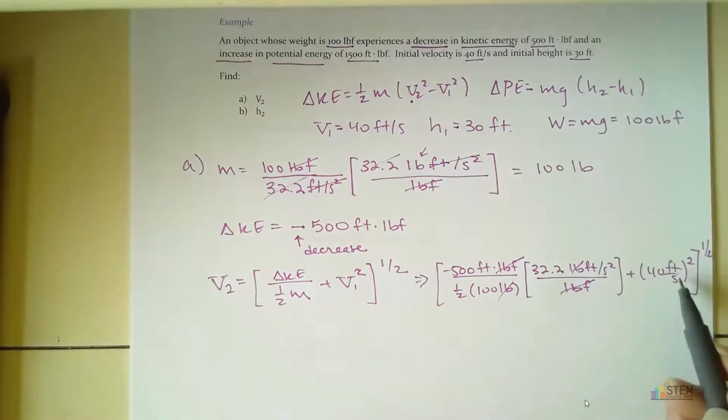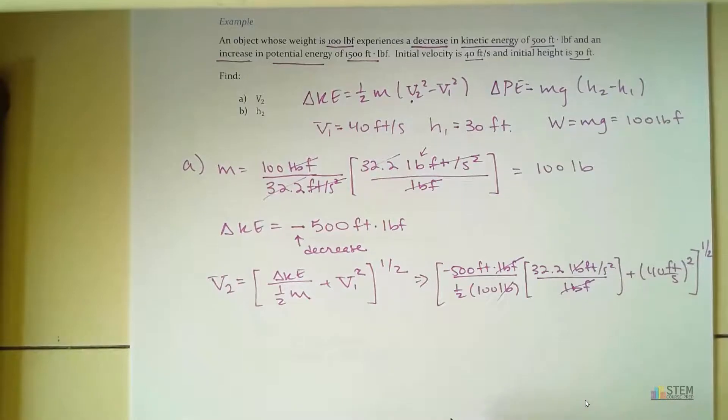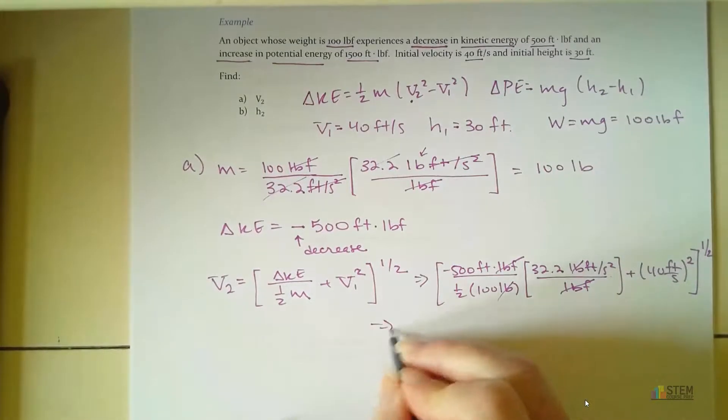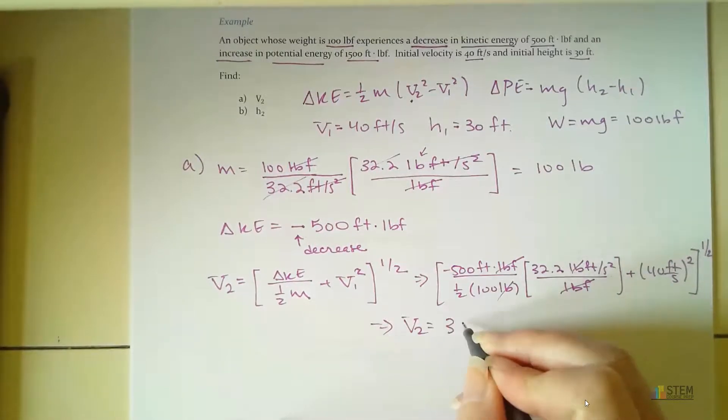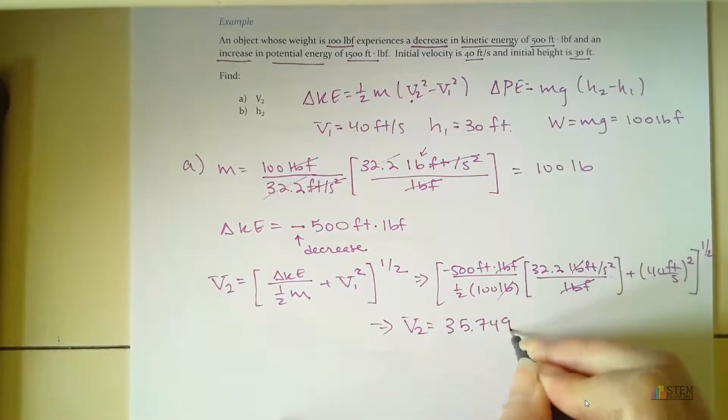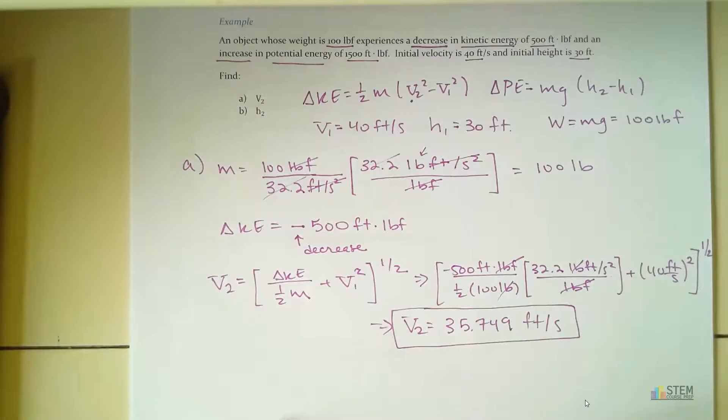Now notice your units here. You got feet squared, second squared. And then here you'll have feet squared, second squared. And then when you take the square root of all that, it ends up being feet per second, which is exactly what we want. So now I'll just do the math in here. Take the square root. And you'll get that your final velocity is 35.749 feet per second.